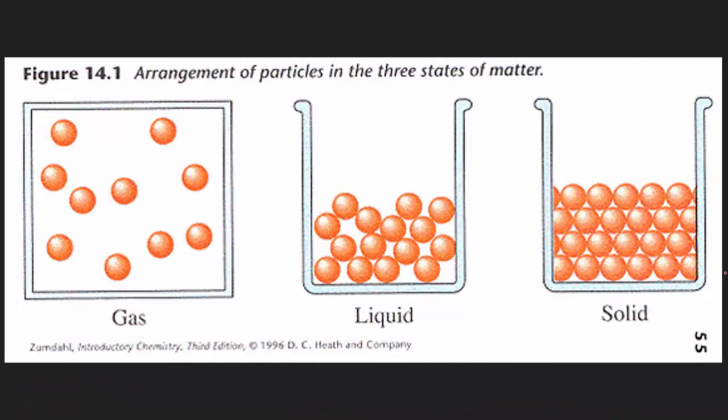Here are some particle diagrams that show the differences between gases, liquids, and solids. As we said, solids are highly compacted. That is why every one of these particles are touching each other. Notice there's very little space.